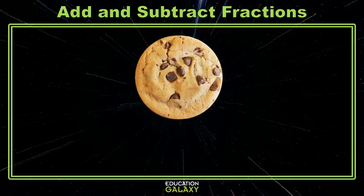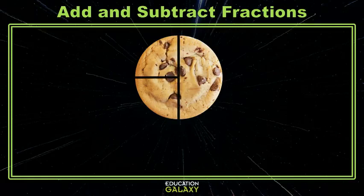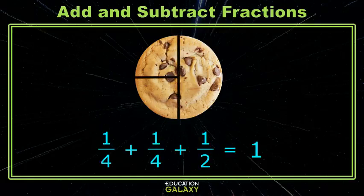But what happens when you have a whole and you break it into halves and then you break one of the halves into fourths? Well now I have a fourth plus a fourth plus a half and I know that's a whole, but how would I add that if I didn't already know the answer? We need this magical thing called common denominators. We know that a half is equivalent to two fourths and now I see that I still have my four fourths and I know that's still a whole.